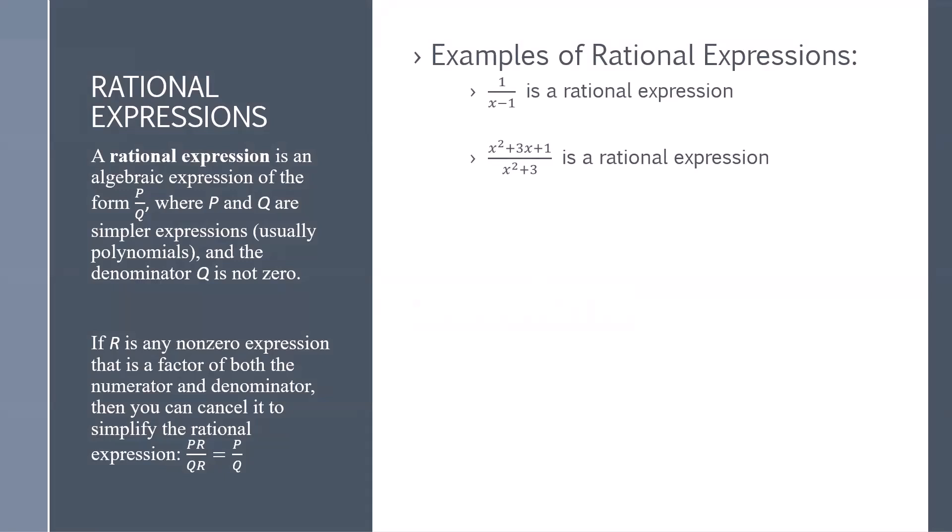If R is any non-zero expression that is a factor of both the numerator and denominator, then you can simply cancel it out to simplify the rational expression. So PR over QR — we cancel out the R's to get P over Q.